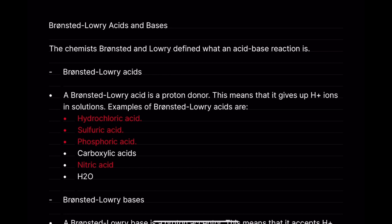A Bronsted-Lowry Acid is a proton donor — that's the most important part here. For example, hydrochloric acid dissociates fully to donate H+, dissociating H+ ions into solution. This means it gives up H+ ions in solution. The key part here is that a Bronsted-Lowry Acid is a proton donor. If you get a one-mark exam question asking what a Bronsted-Lowry Acid is, you can literally say in one line: it's a proton donor.